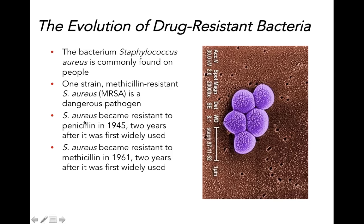Staphylococcus aureus became resistant to penicillin in 1945 — shortly after penicillin was introduced, there was a huge surge in penicillin-resistant Staphylococcus aureus cultures. Comparing strains from before widespread penicillin introduction shows very few had that resistance gene. Methicillin was introduced in 1959, and just two years later we were finding strains of Staphylococcus aureus resistant to that antibiotic.